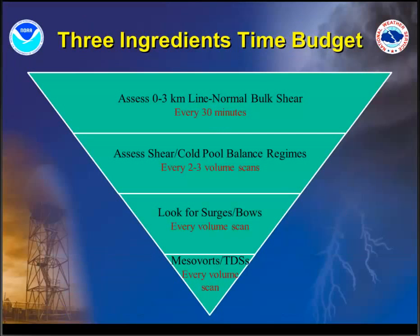When interrogating radar data based on the three ingredients, from a time budget standpoint: every 30 minutes you assess the zero to three kilometer line normal bulk shear, when new model data or a new RAP run comes in. The key question you're asking yourself is: where along my QLCS will I have a line normal component greater than or equal to 30 knots? What orientations will give me that? Know that in advance. If you get a surge or the line pivots, know in advance what orientations give you that good line normal component — that's every 30 minutes to an hour.